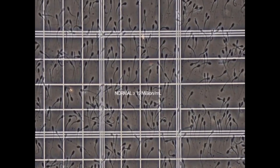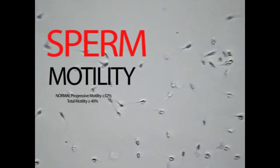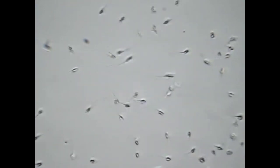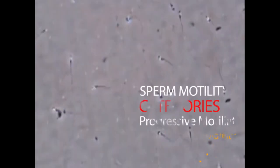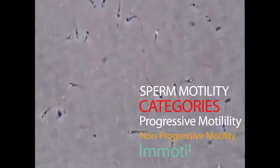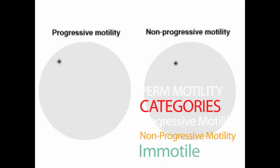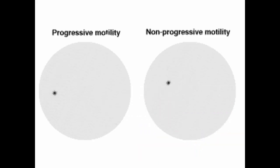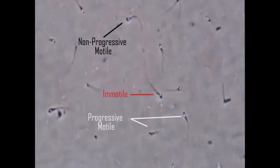Sperm motility is another parameter which is observed and is essentially the movement of sperms. Sperms are characterized as progressively motile, which means they can move in a forward direction. They can also be non-progressively motile, moving from side to side but not in a straight path. Sperms can also be characterized as immotile, lacking motility.